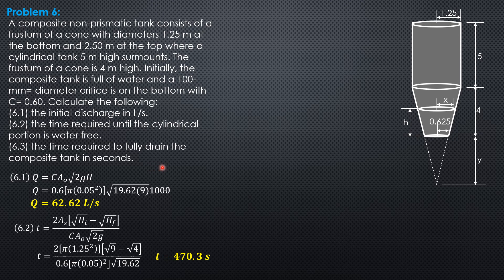For the last part, the time required to fully drain the composite tank, it consists of 470.3 plus time to empty the frustum of a cone. So total time is 470.3 plus T_f, where T_f is the time to empty this frustum of a cone.